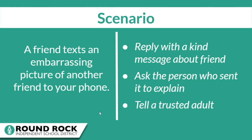Now let's explore a scenario and see how you can encourage your child to be an upstander. We can talk through what might make your child hesitate, as well as some solutions, so they feel ready to face situations like this. The scenario is that a friend sends an embarrassing picture of another friend around over text — that's a pretty realistic scenario. What might make your child hesitate from being an upstander? Your child can reply with a kind message about the friend, ask the person who sent it to explain, or tell a trusted adult in their life. By the way, these are great suggestions for adults to get into the habit of doing as well.